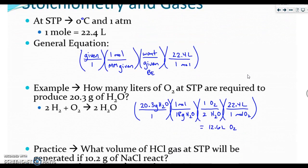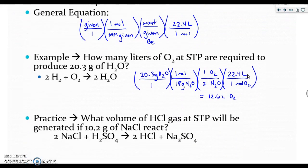We had just completed an example. The question asks how many liters of oxygen at STP are required to produce 20.3 grams of water. This is critical. STP is 0 degrees Celsius and 1 atm, and at STP, 1 mole of a gas equals 22.4 liters.